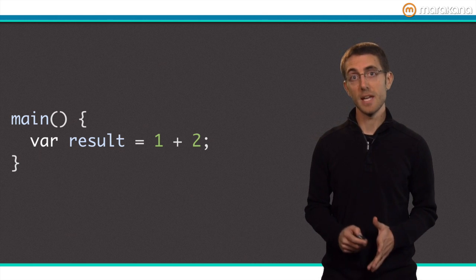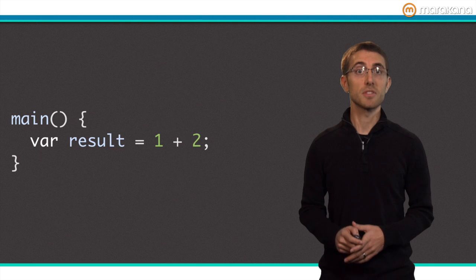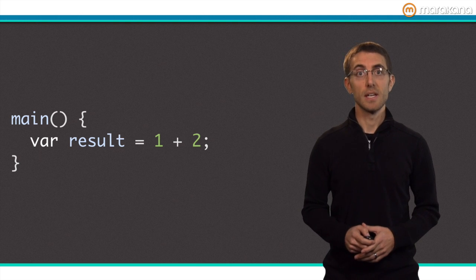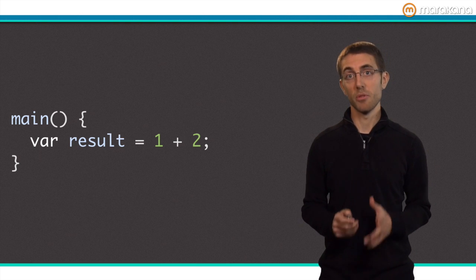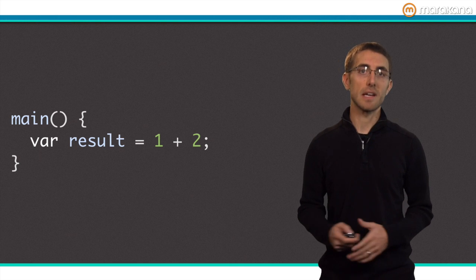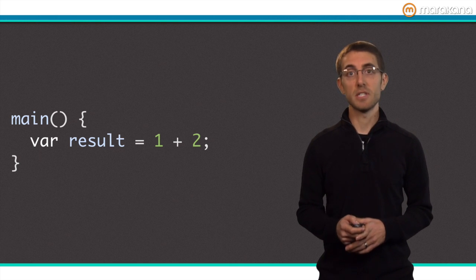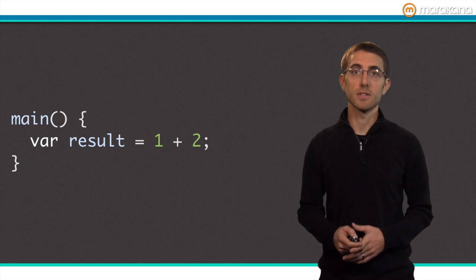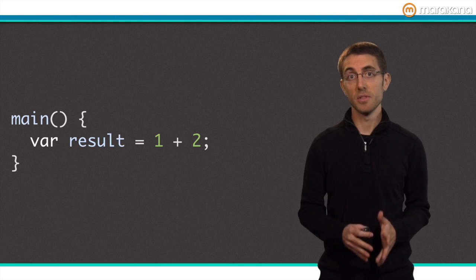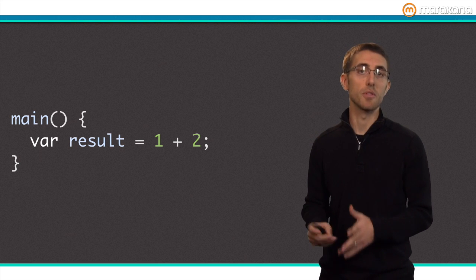In this second mode, named checked mode, the VM inserts dynamic type assertions. If checked mode notices a case where types don't match up, it will throw an exception. Developing and testing in checked mode helps you catch potential bugs early based on type annotations. In other words, in checked mode, the type annotations do affect how the program runs.